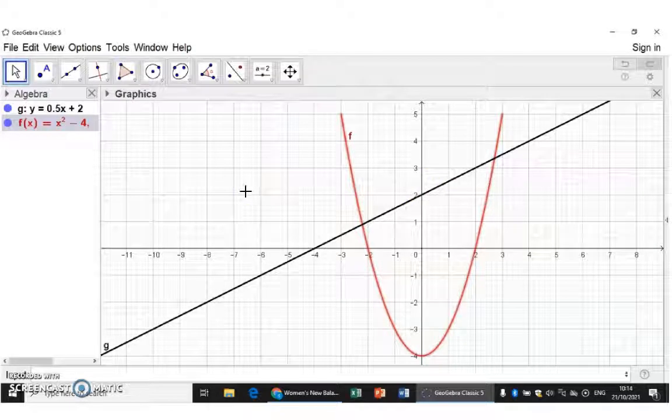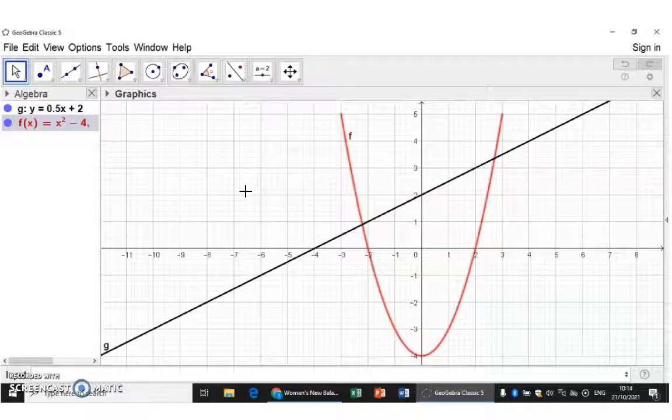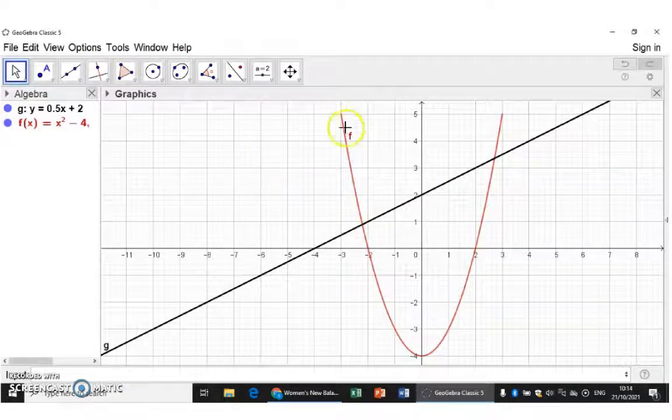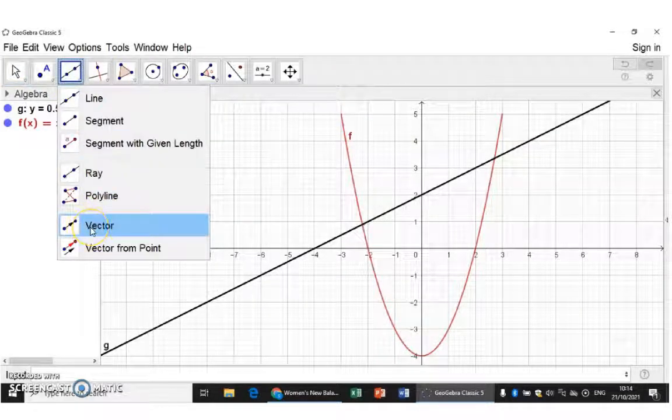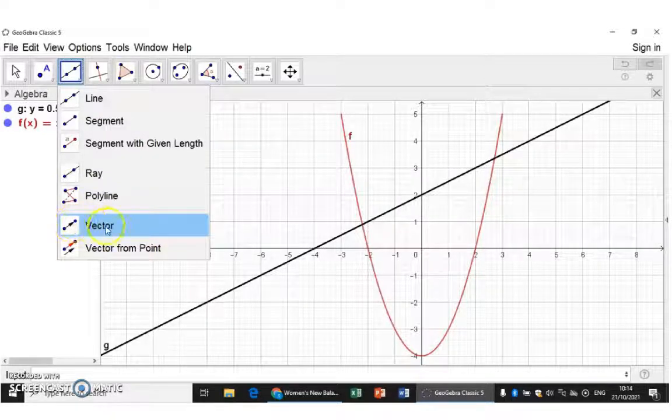This is unfortunately where GeoGebra is not ideal yet. It is quite difficult to add neat arrow points. To do that, you will have to add vectors. That's the only option at the moment. We choose to add a vector because it has an arrow point at the end.